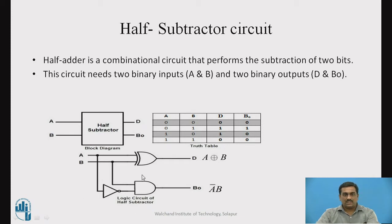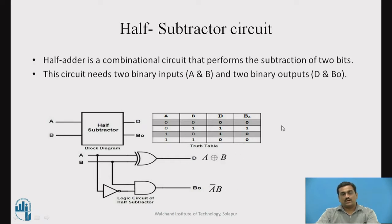Here you can see the implementation diagram for the half subtractor circuit. D is equal to A XOR B, whereas BO is given as A-bar AND B. We are going to use these equations for implementing our Verilog program for this circuit.